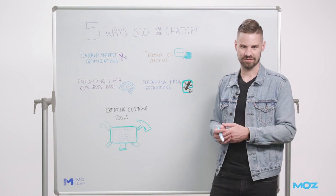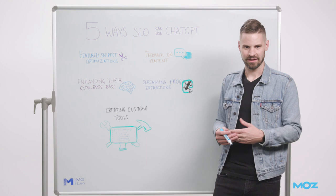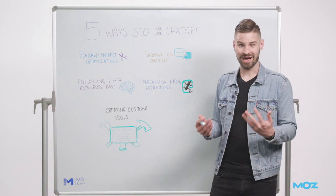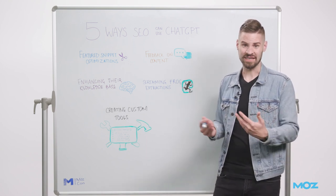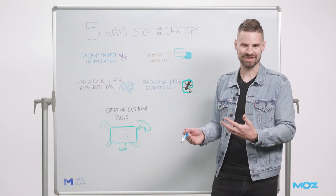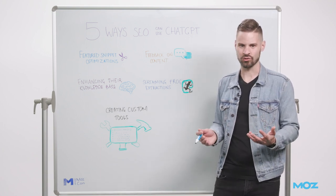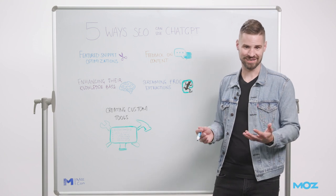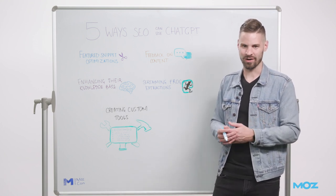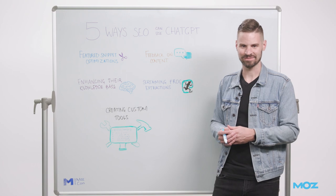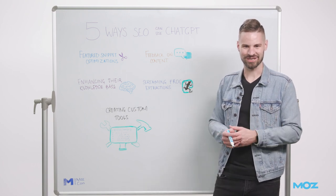We'll link that article in the video description if you want to run through that process. There are a lot of great use cases for ChatGPT when it comes to SEO — even more than just creating new content. There are creative ways to leverage these tools, and SEOs that are leaning into them and learning how to use them are going to be the ones that see success in the long term. Thanks for joining me everyone — that was this week's edition of Whiteboard Friday.